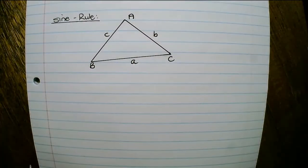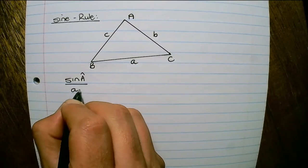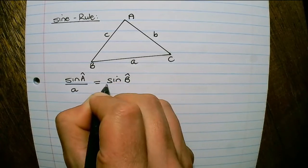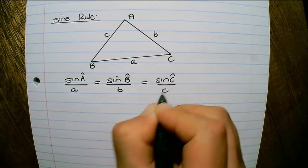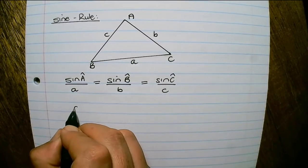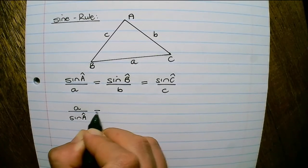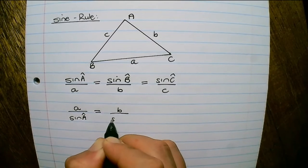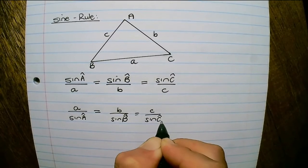The sine rule is the simplest of the three: sine A over a equals sine B over b equals sine C over c. Because this is a ratio, you can also use it the other way around: a over sine A equals b over sine B equals c over sine C.